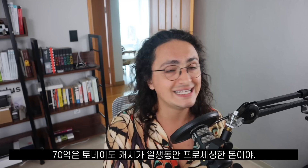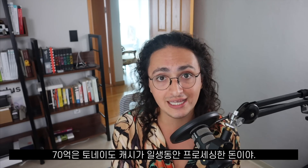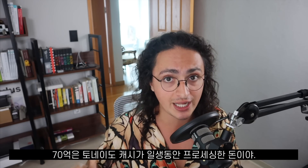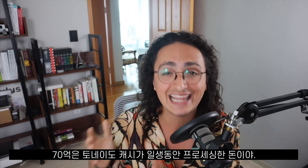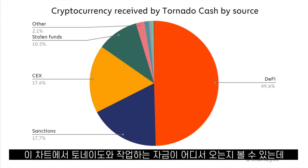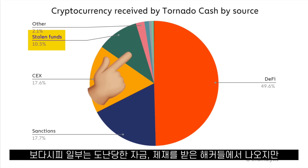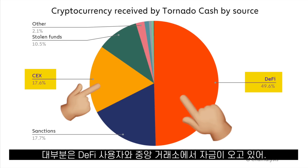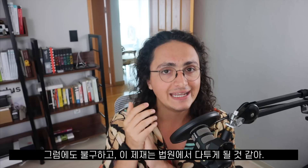The $7 billion figure mentioned in the sanction may not be entirely accurate. Seven billion is the total amount of money that has passed through Tornado Cash in its entire lifetime. On a chart showing where the money that interacts with Tornado Cash comes from, you can see that some of it comes from stolen funds and sanctioned actors, but most of it comes from DeFi users and centralized exchanges.